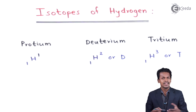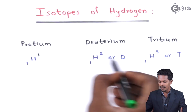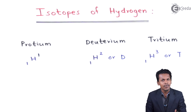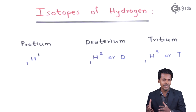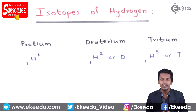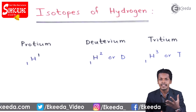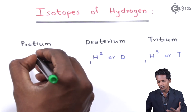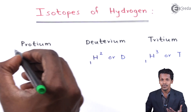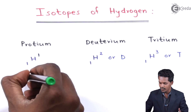For all three isotopes — protium, deuterium, and tritium — the atomic mass is different, but the atomic number is the same. The total number of protons is one for all three. In the case of protium, the atomic mass number is 1, meaning one proton and zero neutrons, so the total number of neutrons in protium is zero.